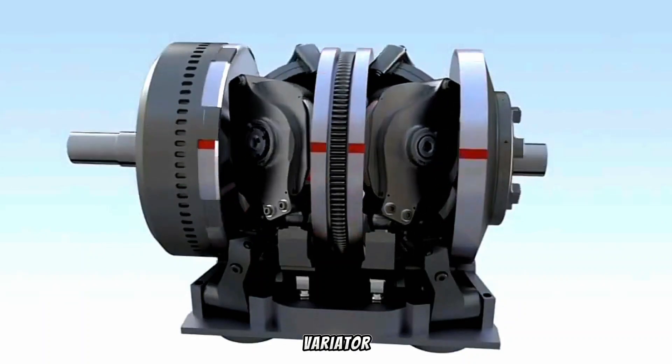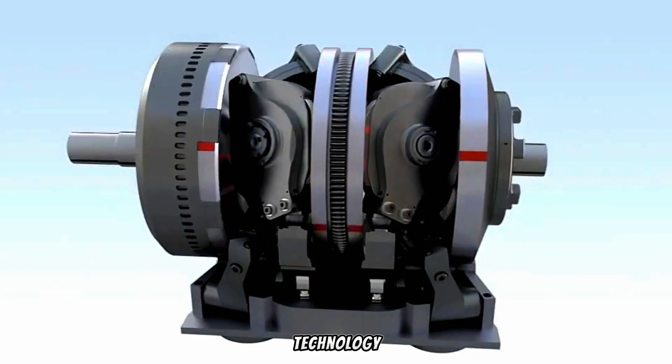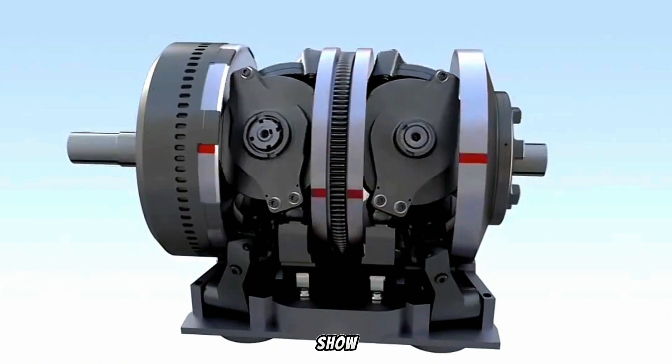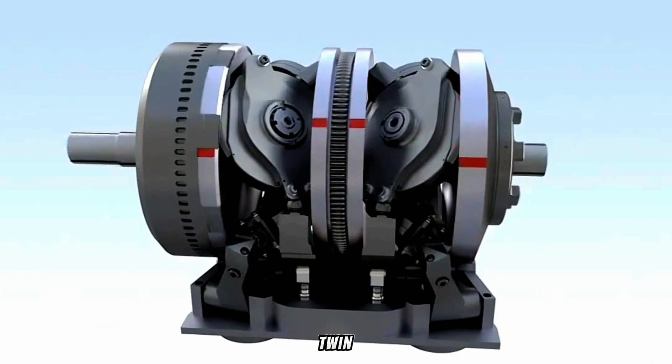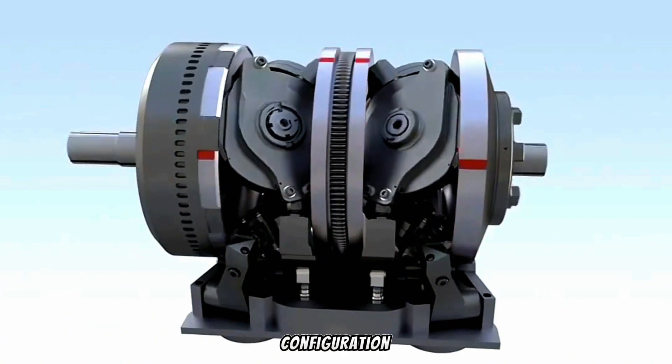The full toroidal variator is the core of Torotrax technology. This animation will show how a typical variator is constructed and works, based upon a twin-cavity, six-roller configuration.